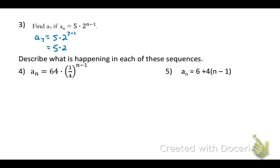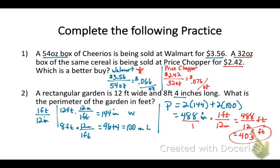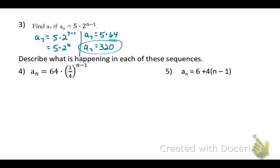Let's back up to number 3. If a sub n, we want to find a sub 7, the seventh term in the sequence. If a sub n equals 5 times 2 to the n minus 1, I'm going to plug in 7. Then notice we end up getting 5, which is our starting amount, times 2 to the sixth power. 5 times 64, so our seventh term is 320.